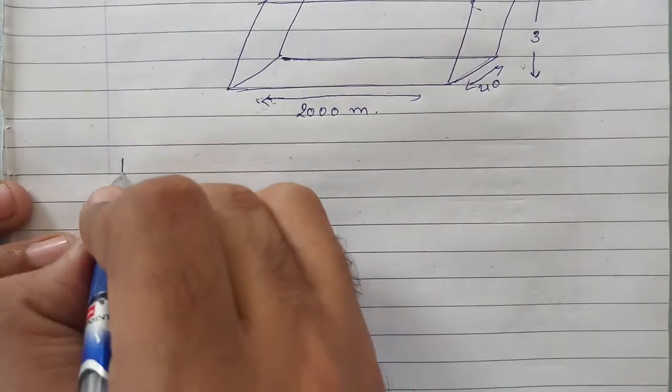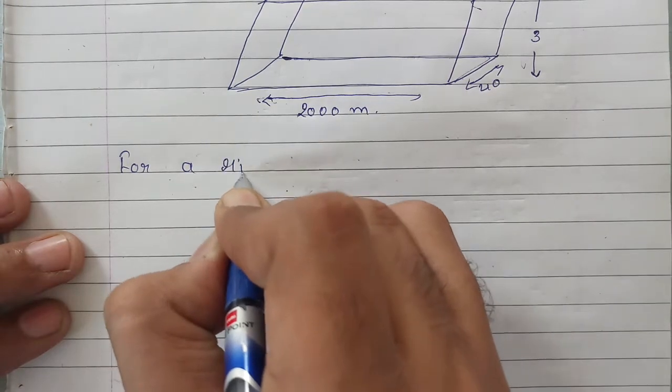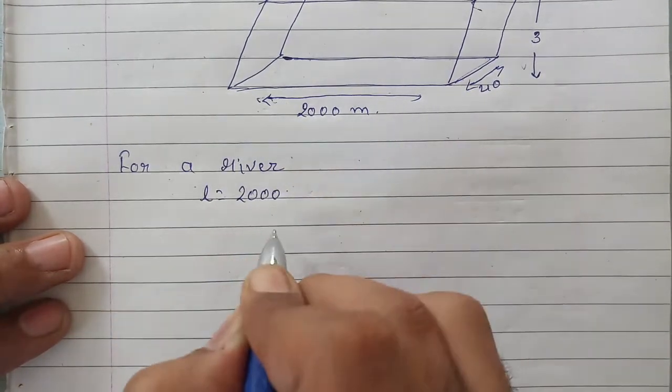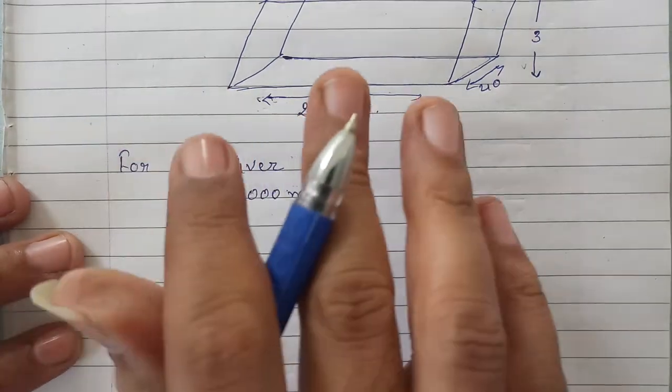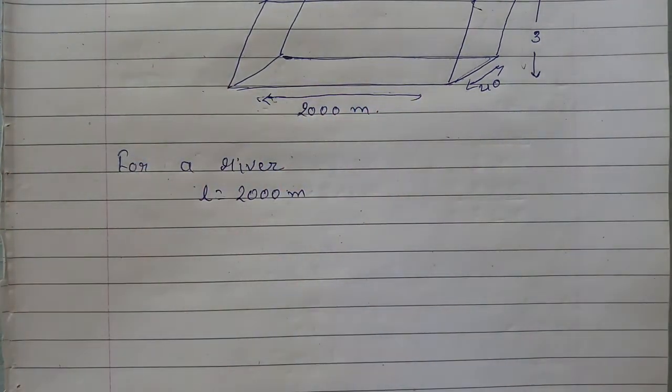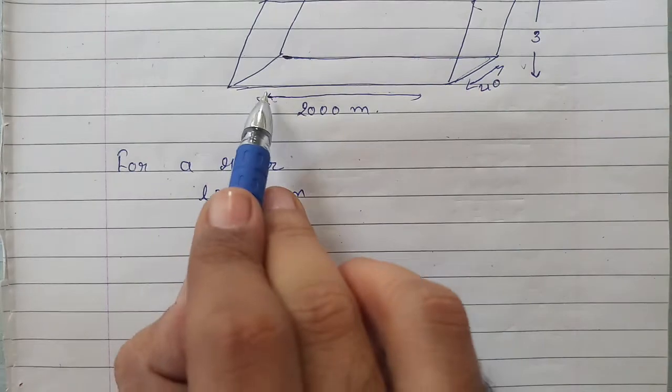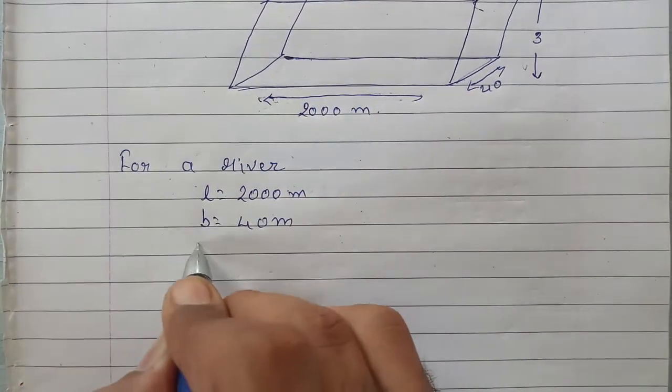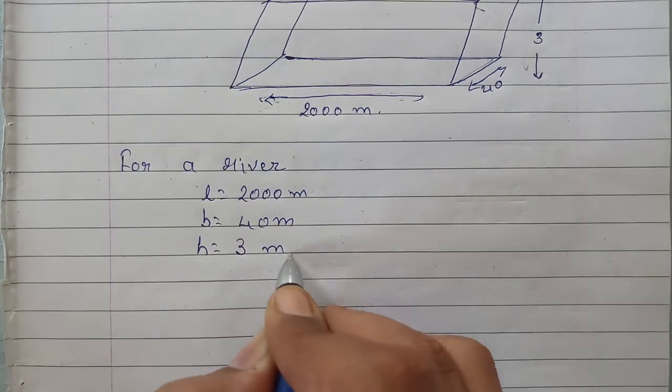So let's write down the dimensions for a river. Length is equal to 2 kilometer, 2 kilometer means 2000 meter, for 1 hour. Whatever you find will be for 1 hour, because we are given the length for 1 hour as 2000. Width is 40 meter and depth, that is height, is 3 meter.